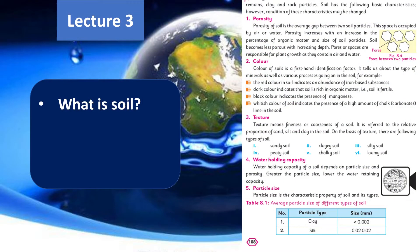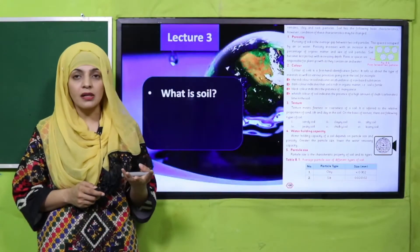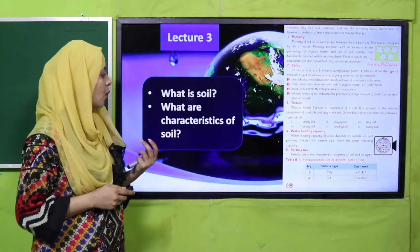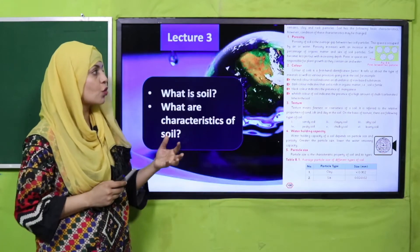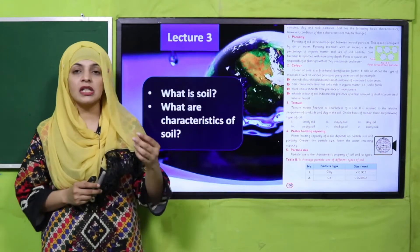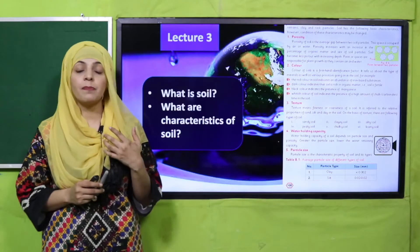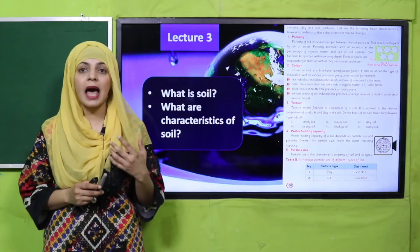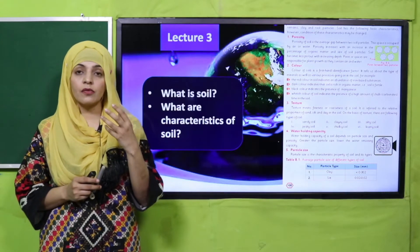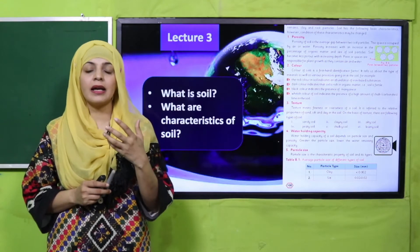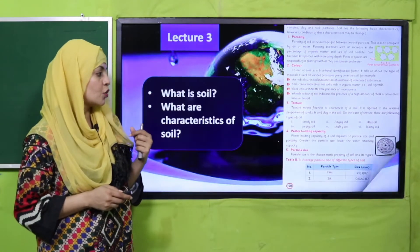Then in lecture number three we discussed about the soil. So what is soil? Soil is the uppermost part of the earth that is present on the crust, and we grow plants in the soil. What are the characteristics of the soil? The characteristics of the soil are porosity, color, texture, water holding capacity, and particle size.